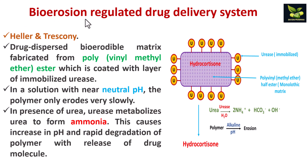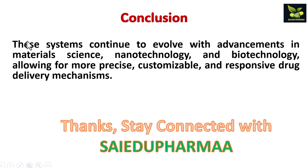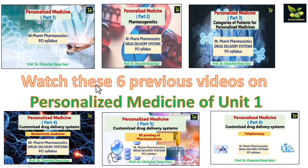The main mechanism is bioerosion, and by bioerosion the drug is released. In conclusion, these systems continue to evolve with advancements in material science, nanotechnology, and biotechnology, allowing for more precise, customizable, and responsive drug delivery systems. Thank you so much — stay connected with Sci Edu Pharma and watch the previous videos of Unit 1 of drug delivery systems.